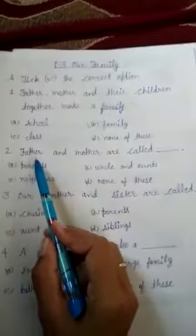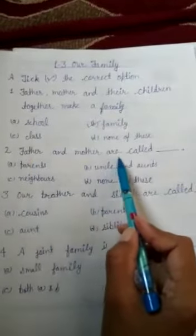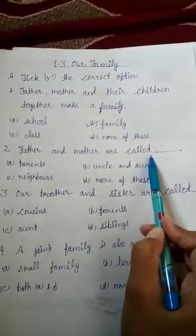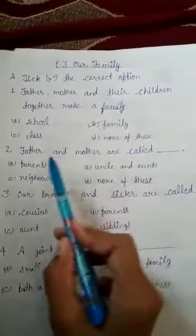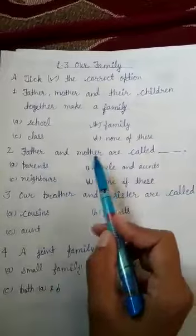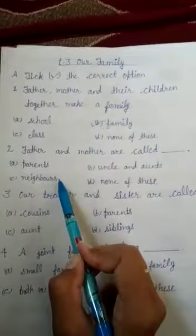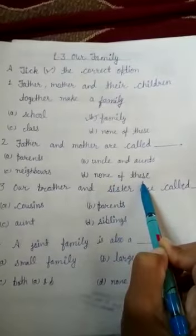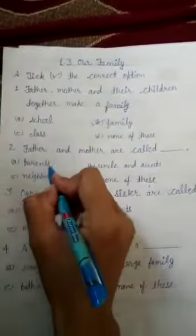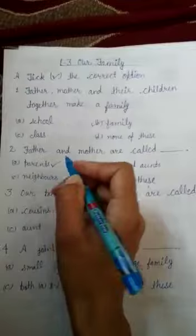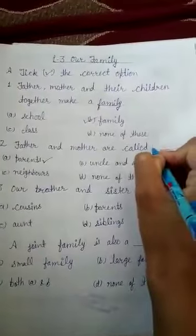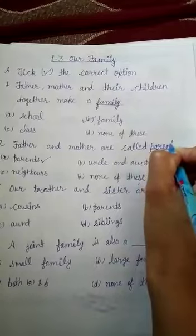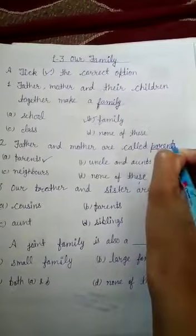Second number question. Father and mother are called. Mommy and Papa, parents, neighbors, uncle and aunts, none of these. Parents. P-A-R-E-N-T-S. Parents. Okay.